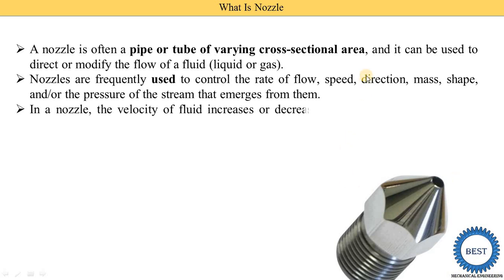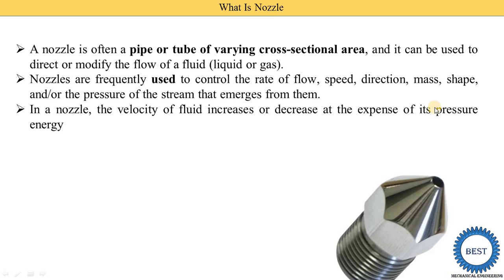In a nozzle, the velocity of the fluid can either increase or decrease depending on the type of nozzle, and this happens at the expense of its pressure energy. When velocity increases, pressure is reduced, and when velocity decreases, pressure is increased. This trade-off is referred to as the expense of the other parameter, which in this case is pressure energy.